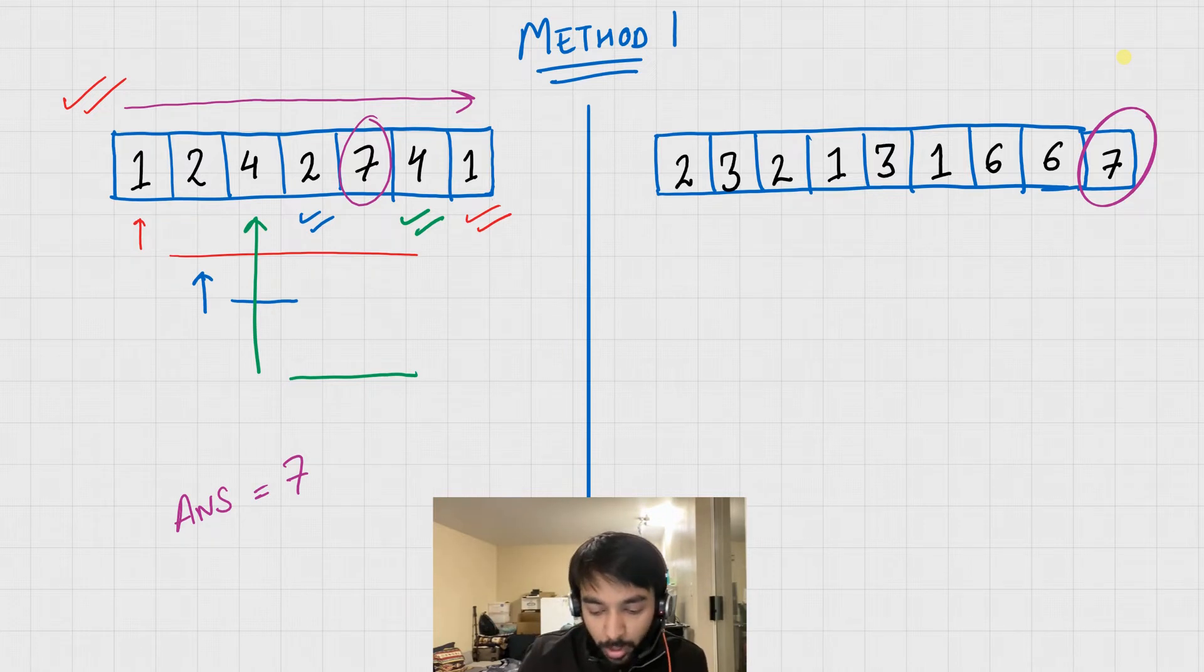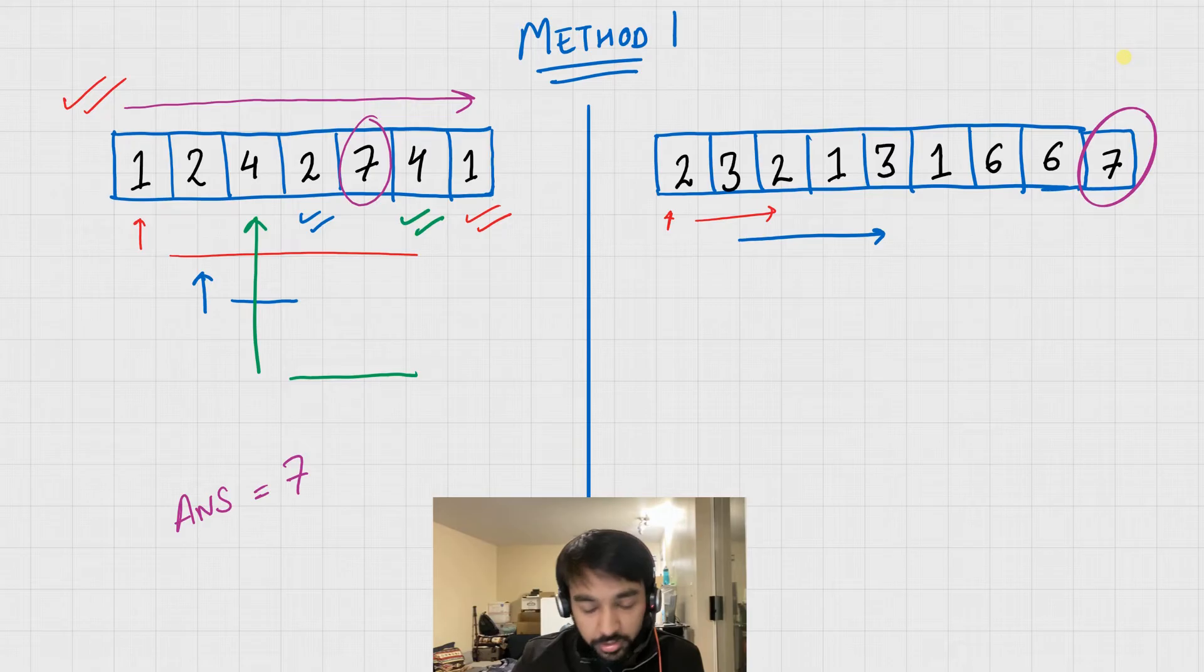Let's say if you were to approach this problem with this method, so what you would end up doing is, like you start at 2 and then you come here, you see, oh that's not my answer. Then you start at 3, you come over here and you see, oh that's not again my answer.